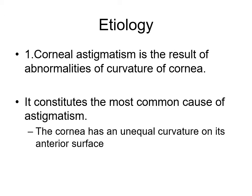Corneal astigmatism results from abnormalities of curvature of the cornea and constitutes the most common cause of astigmatism. When the cornea is steep, the rays will bend more and the eye can go toward the myopic side. When the cornea is flatter, the eye will go toward hypermetropia. Clinically, you should know about keratoconus, keratoglobus, and cornea plana, because according to the curvature of the cornea, the patient will have a different refractive state. The cornea has an unequal curvature on its anterior surface.